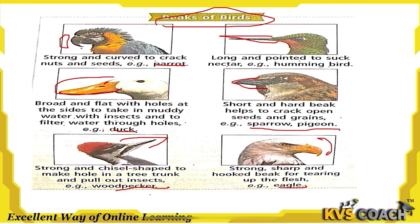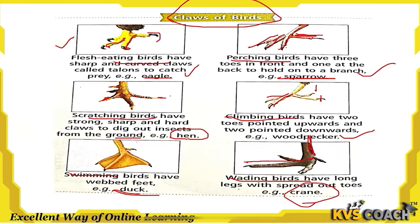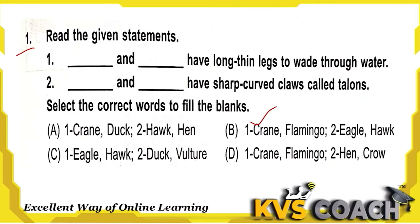Now let's start the questions. The first question: which birds have long thin legs to wade through water? Crane has long legs, and flamingo also has long thin legs to wade through water. Duck has webbed feet, not long legs, so duck is not the correct answer here. The answer is crane and flamingo.